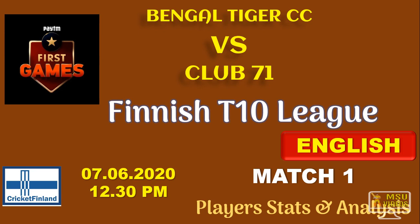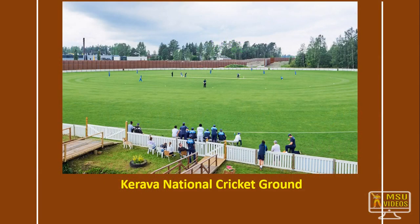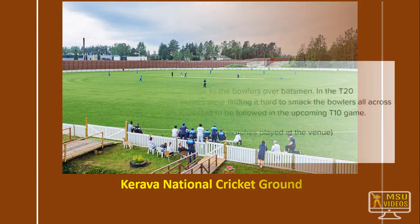In the 10-10 League today alone there are five different matches, with six teams participating total. The first match is Bengal Tiger Cricket Club versus Club 71 Cricket Club. We know Bengal Tiger CC because they play in the Finnish Premier League, but we don't know much about Club 71. We are going to use the app Paytm First to select the teams. All matches are happening at Karava National Cricket Ground in Finland.